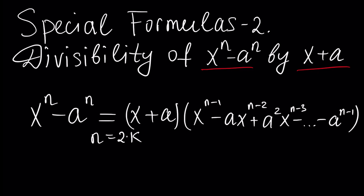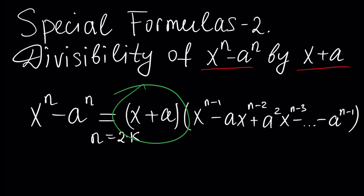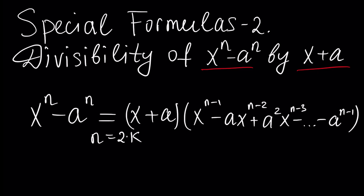In this video tutorial, we will learn the next special formulas in algebra — the divisibility of a polynomial by x plus a. In particular, we will learn that in general, x^n minus a^n can be divisible by the binomial x plus a, and the resulting quotient after division will be presented. This formula is very useful in algebra. At the end of this tutorial, you will be able to prove and use it. Like and subscribe, and let's get started.